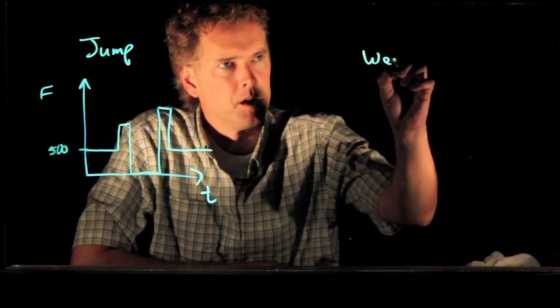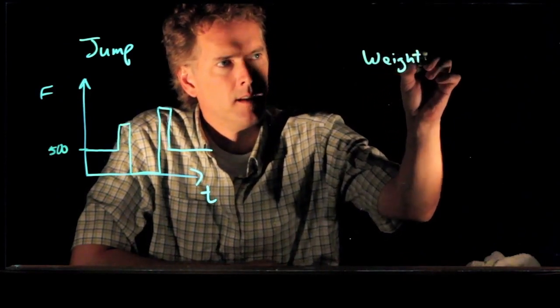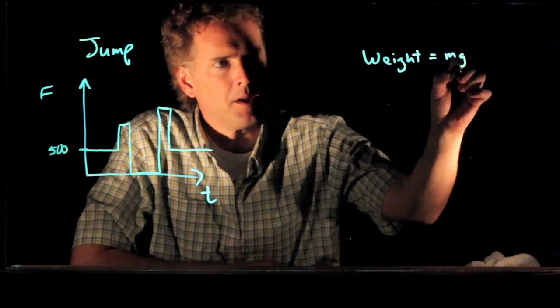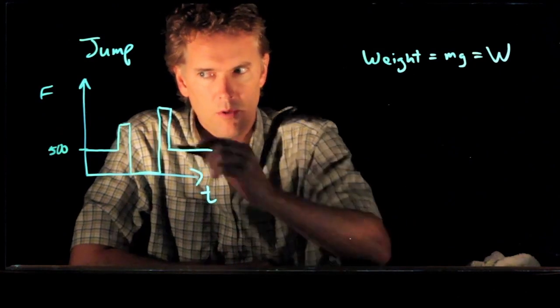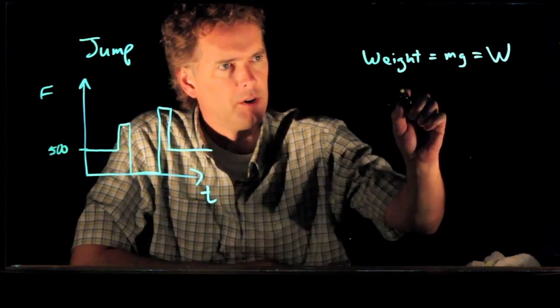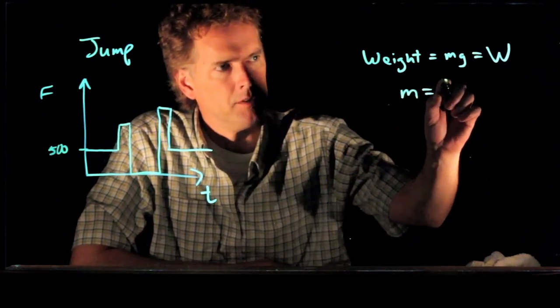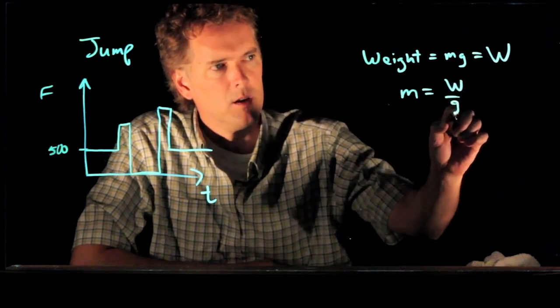So that's the first thing we can understand. The weight is of course just equal to mg. Let's call that weight W. And so if we know the weight W, we can solve for the mass. Mass is just their weight over gravity.